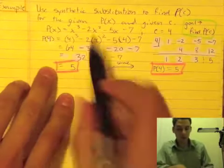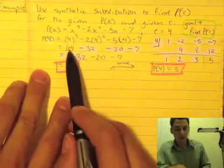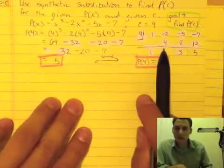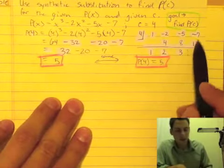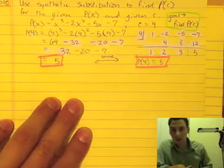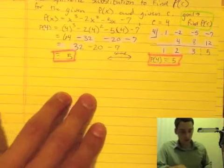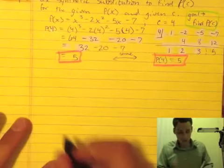When you're doing these problems you won't have to do all this stuff. You won't have to go 64 minus 32 minus 20 minus 7. You can just do the synthetic division which is a lot simpler math and get your answer. A lot less room for mistakes I think. So, one more example for that.